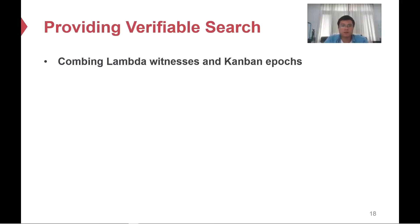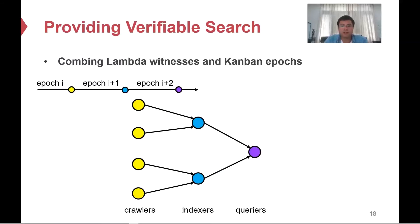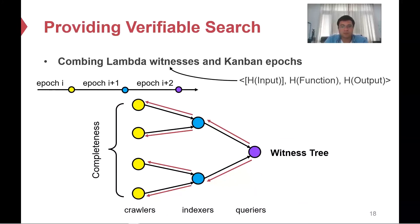To provide verifiable search, we combine lambda witnesses and Kanban epochs. For each search pipeline, every lambda generates a witness. As the witness records the causality between input and output, these witnesses will be organized into a witness tree. Because the witness data structure contains the output function and input information, a user can easily trace the witness tree from root to leaves to learn if the queried items are complete. Please refer to our paper for details.